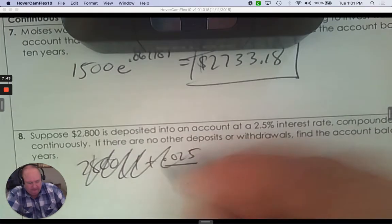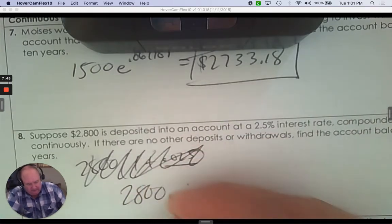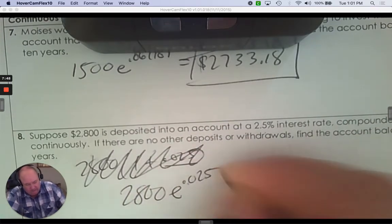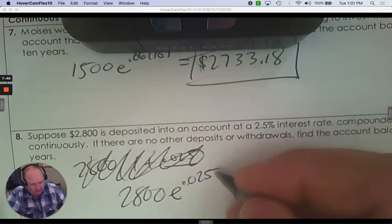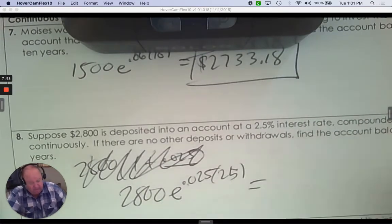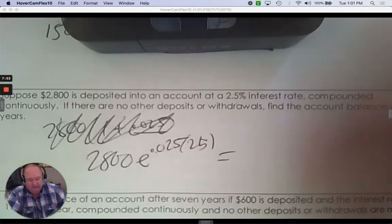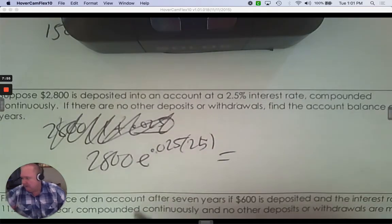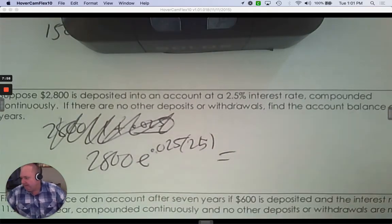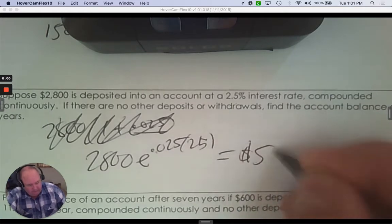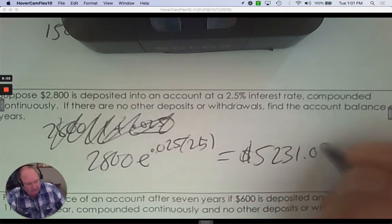Oh, this is not the right formula. Compounded continuously. $2,800 E to .025. And then after 25 years. Just use your calculator. If you make a mistake, scratch it out. All good. That's $5,231.09.